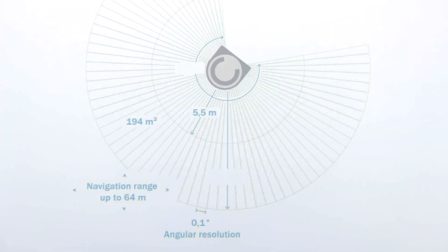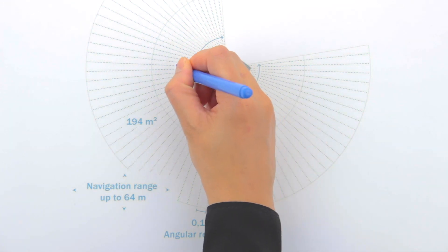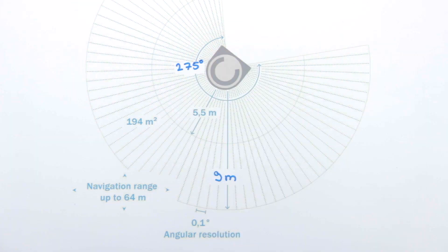Oh, and by the way, with SAFE HDDM we reach a protective field range of 9 meters while completely covering a scanning angle of 275 degrees.